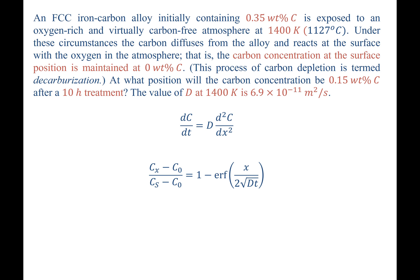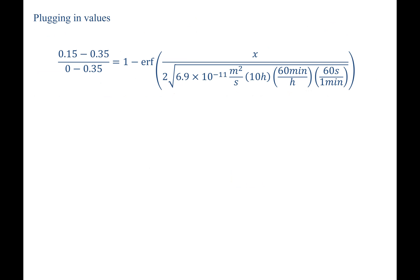Let's go ahead and plug in the values. Once the values are plugged in, we see that the only thing we don't know is x. So let's start simplifying. The left-hand side of our equation and what's inside of our error function can be reduced to single values. We have 0.571 equals 1 minus the error function of x, which we're going to solve for, over a distance, 3.152 times 10 to the negative third meters.